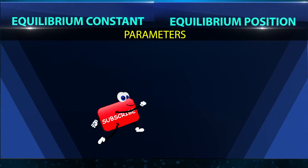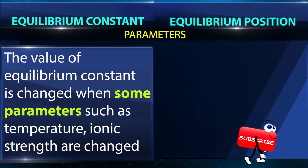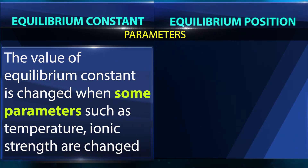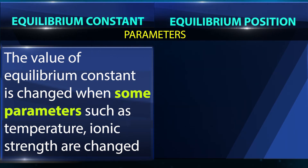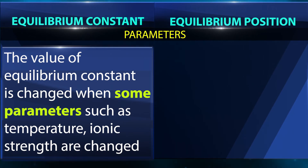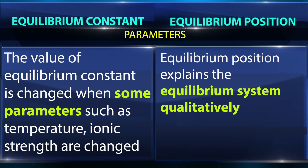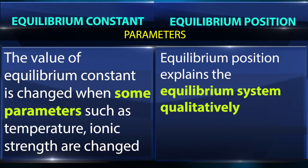Regarding parameters: the value of the equilibrium constant changes when some parameters such as temperature and ionic strength are changed. In contrast, the equilibrium position does not change due to any change of the system.